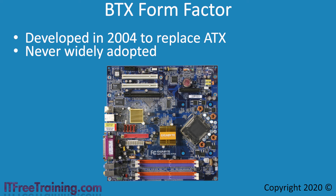As heat sinks became more efficient, there was less need to have better airflow on the motherboard. However, the biggest reason the form factor was not adopted was that the specifications were too rigid to allow larger CPUs. CPUs started becoming larger when memory controllers were moved into the CPU, and these CPUs had to use the ATX form factor.